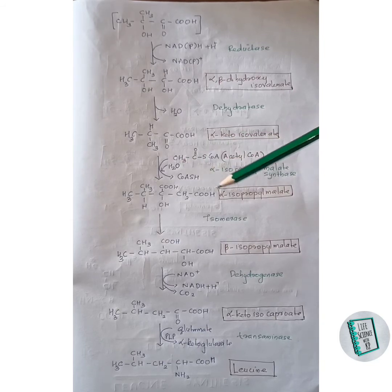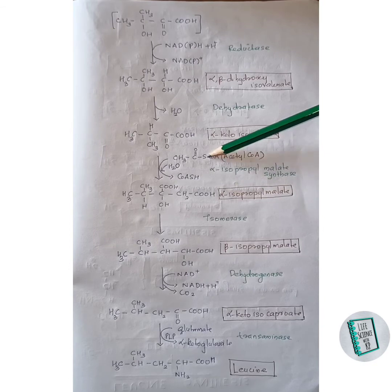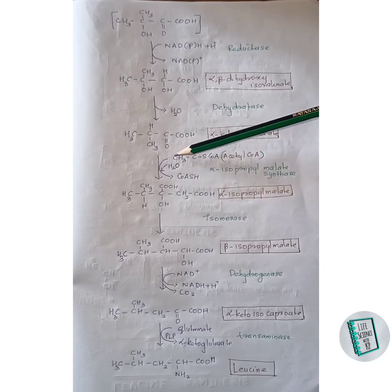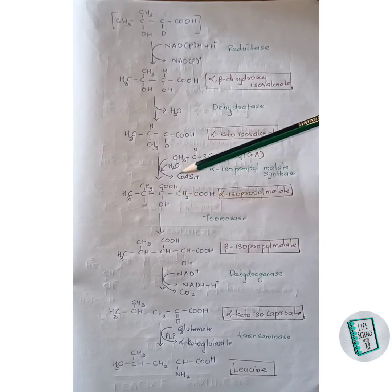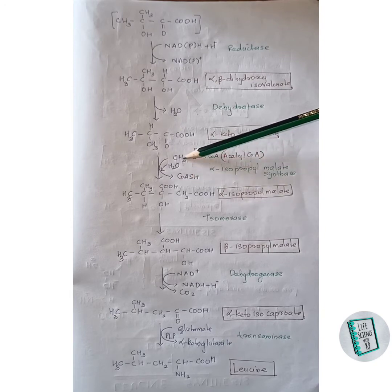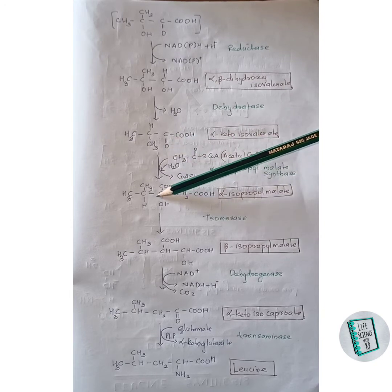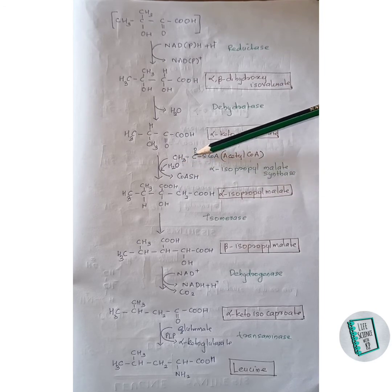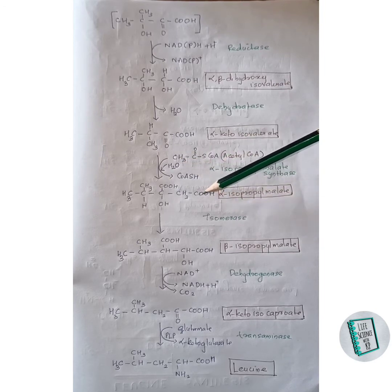Alpha-ketoisovalerate reacts with acetyl-CoA with the addition of a water molecule to form alpha-isopropylmalate. The S-CoA is cleaved by the water molecule; one hydrogen from the water leaves with the S-CoA as CoASH. The CH3 group then attaches to the adjacent carbon, and the remaining hydrogen from CH3 attaches to an oxygen forming an OH group, while the remaining OH of the water molecule adds to the C=O to form a carboxylate group, yielding alpha-isopropylmalate.